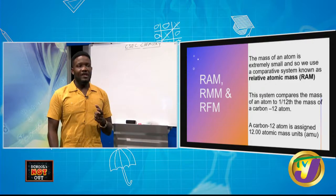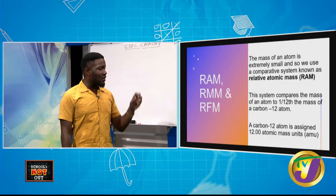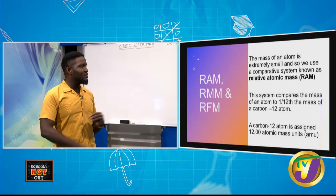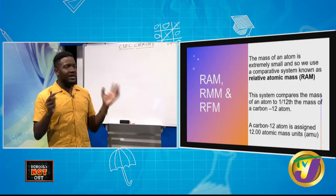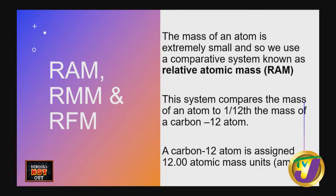We use carbon-12 because of its relative abundance in the atmosphere. A carbon-12 atom is assigned a unit of 12.00 atomic mass units, which means one twelfth of that would be 1 AMU. The mass of every atom in the periodic table is derived by comparing it to carbon-12. Relative atomic mass takes into account the relative abundance of each isotope — for example, carbon-12, carbon-14, and isotopes of hydrogen like protium, deuterium, and tritium.